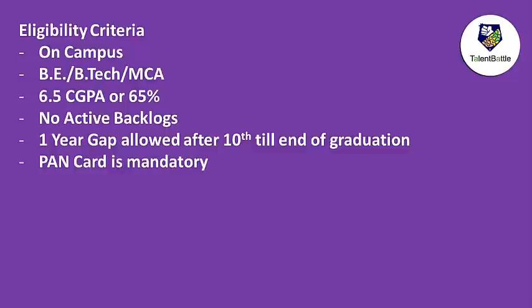Students from BE/BTech/MCA are eligible. You need to have a minimum of 6.5 GPA or 65% in your academics, and there should not be any active backlog. One year gap is allowed after 10th standard till the end of graduation. Importantly, Accenture has made PAN card mandatory in their entire selection process — you need to apply for it immediately if you don't have one.